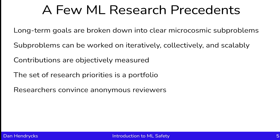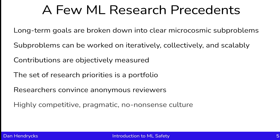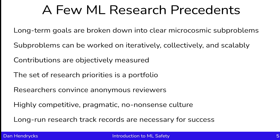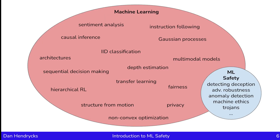The machine learning research community has anonymous peer review — they're not trying to convince their friends, they're trying to convince people they don't know. The ML research community is also highly competitive, pragmatic, and fairly no-nonsense. For success in the machine learning research community, one's long-run track record is the main way to attain higher status. Despite sharing research precedents, machine learning safety is not the entirety of machine learning.